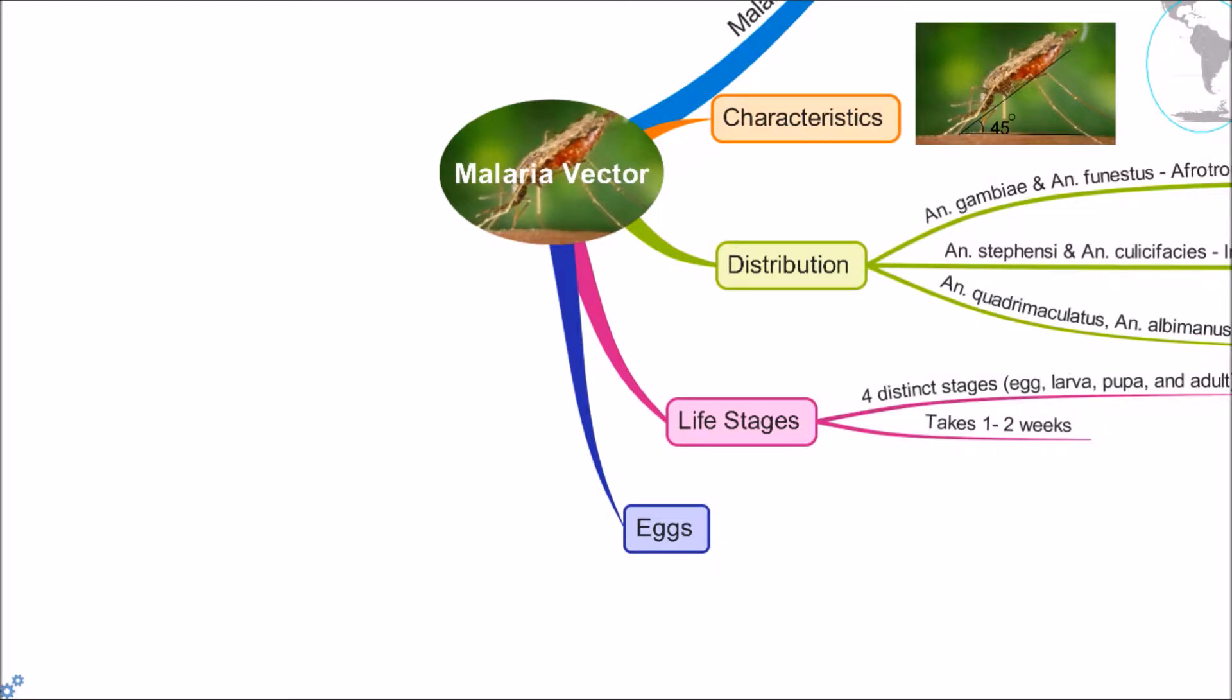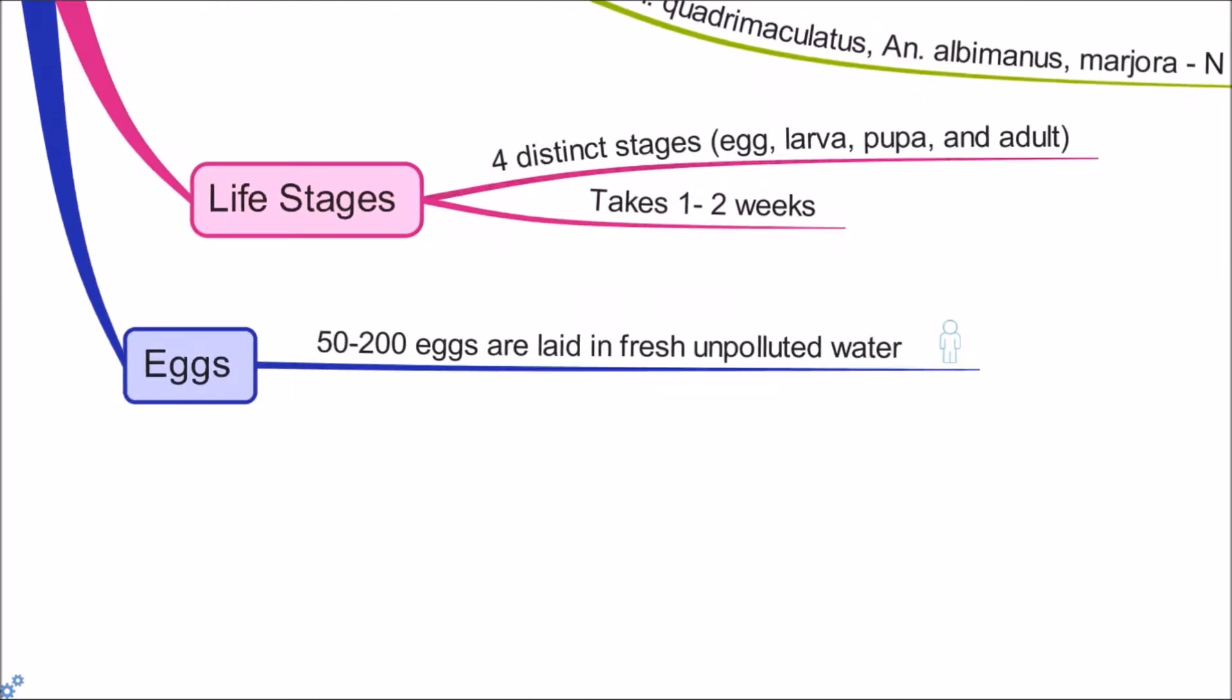The eggs. Adult females lay 50 to 200 eggs per oviposition. Eggs are laid singly directly on water. Some Anopheles species prefer turbid water exposed to sunlight, like Anopheles gambiae, while other species prefer shaded habitats, like Anopheles funestus.